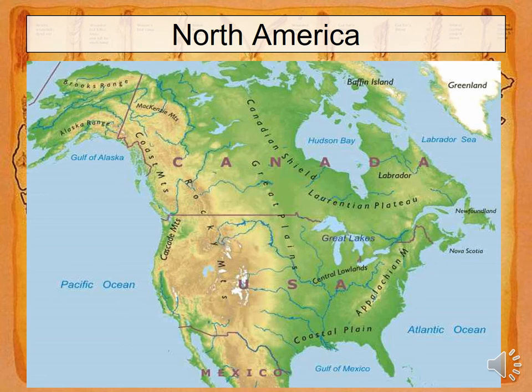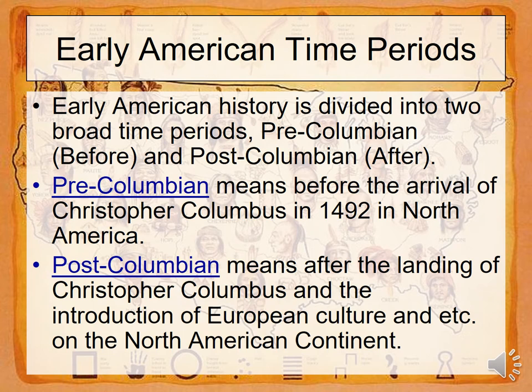Looking at a map here, you can see the different regions of America. One thing I found fascinating in studying history was how maps can be used by different people. The Dutch, the French, and the Spanish produced maps, but their maps didn't look anything like the British and American maps. Their maps actually highlighted where different tribes lived and their different regions. But for the British and later America, most maps produced didn't have any named tribes because they were trying to advertise that the land was open and free for the taking.